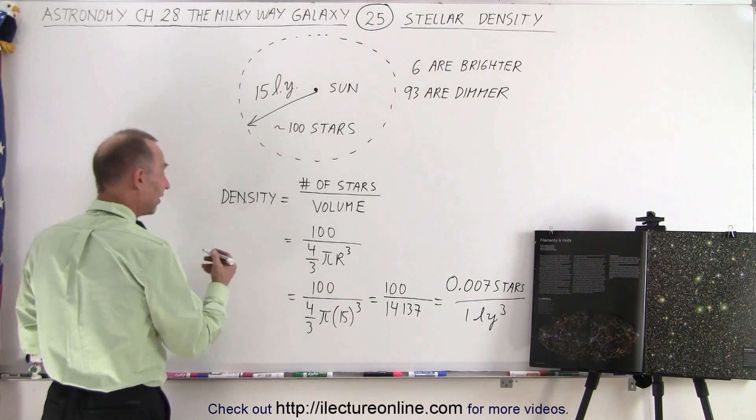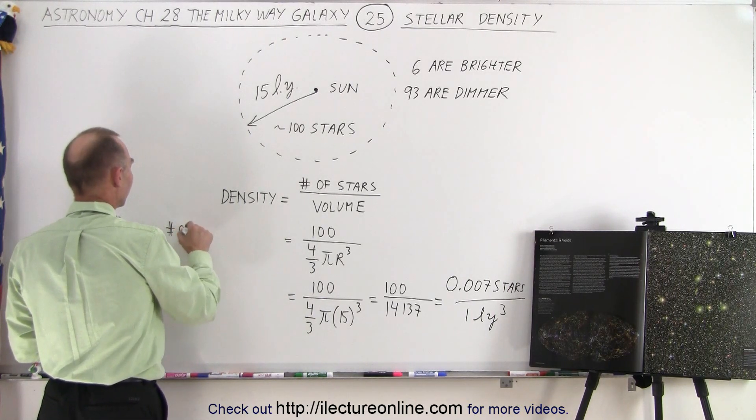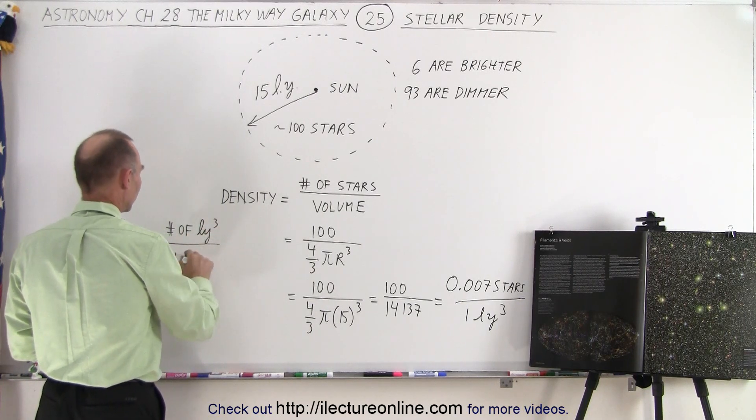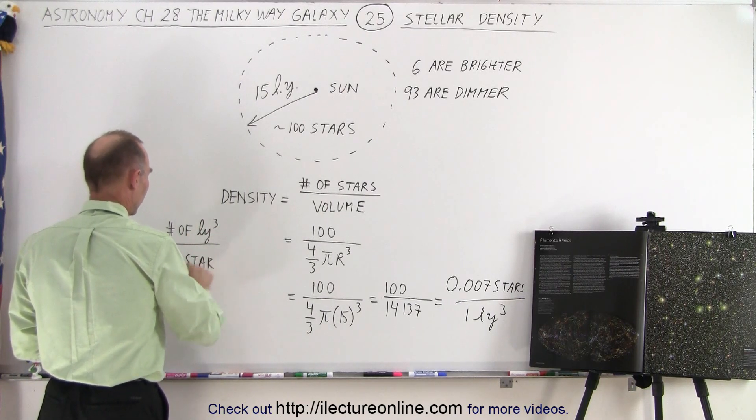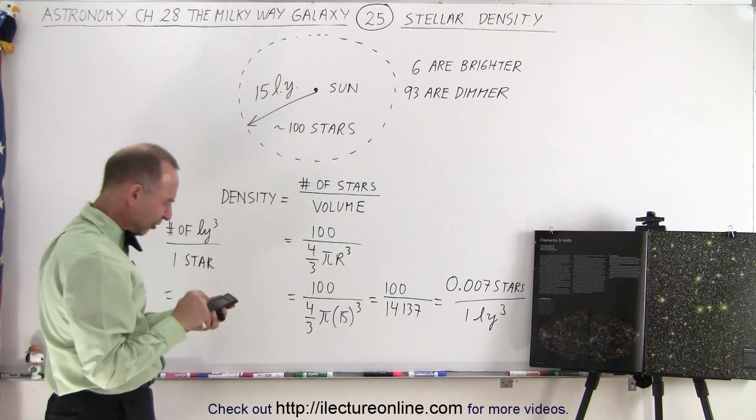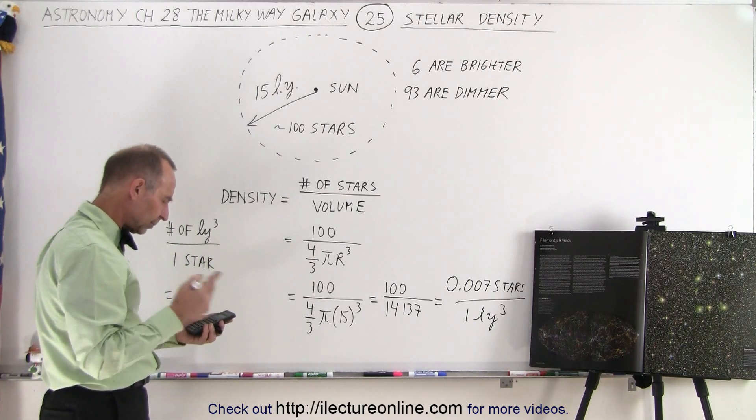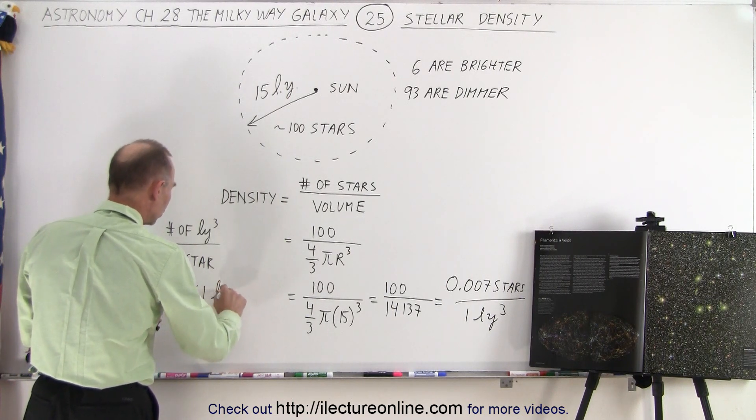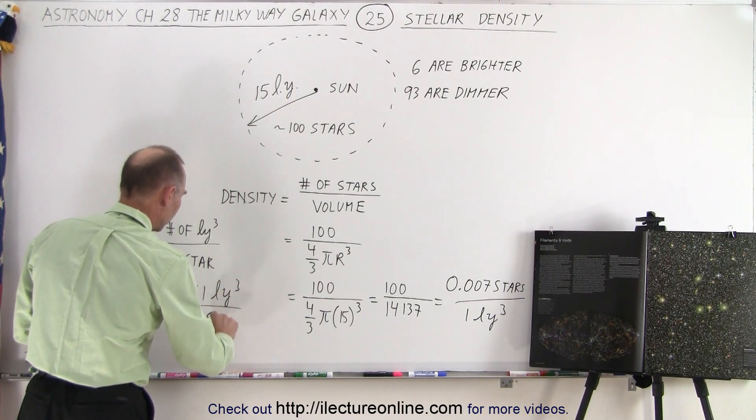Let's do the density in terms of number of cubic light years per one star. So what we're going to do is we're simply going to take the inverse of that, and that shows me that there's 141 cubic light years per one star.